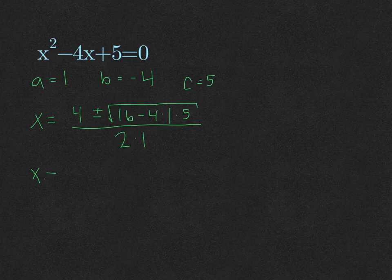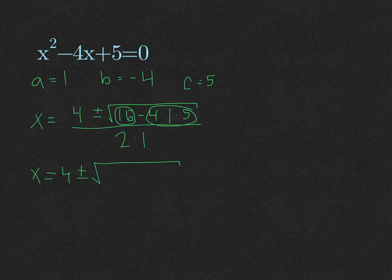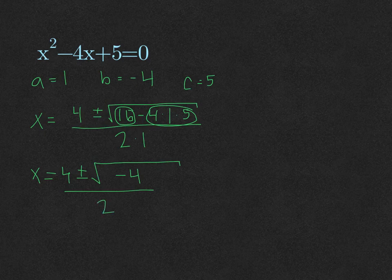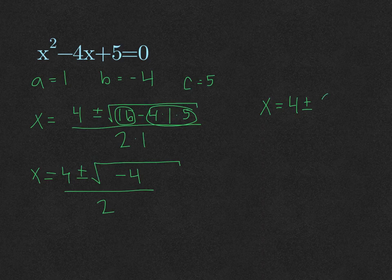X equals 4, plus or minus 16 here, minus 4 times 5 is 20. 16 minus 20 is negative 4, divided by 2. What that means is x is going to equal 4, plus or minus the square root of negative 4, which is 2i, all divided by 2.